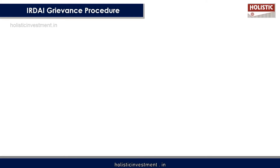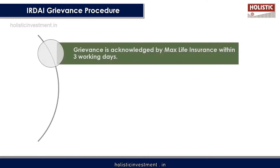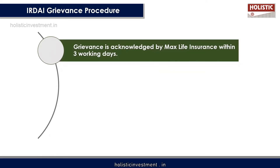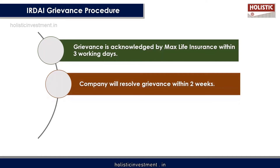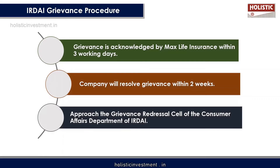Here is the IRDAI grievance procedure. As per the Act, a policyholder is entitled to make a complaint or grievance to the insurer. Any grievance received is acknowledged by Max Life Insurance within 3 working days. The company will resolve the grievance within 2 weeks. If no response is received, customers can escalate to the grievance officer at the head office. If still unresolved or unsatisfactory, you can approach the grievance redressal cell of the Consumer Affairs Department of IRDAI.